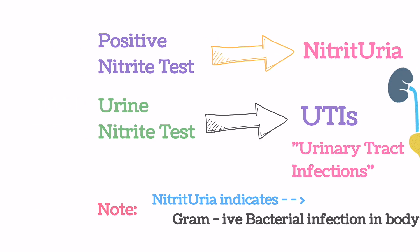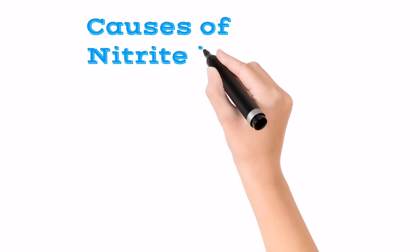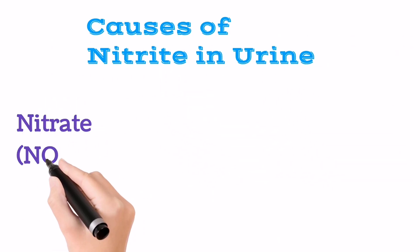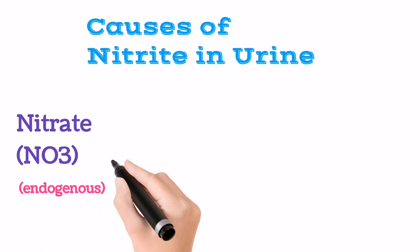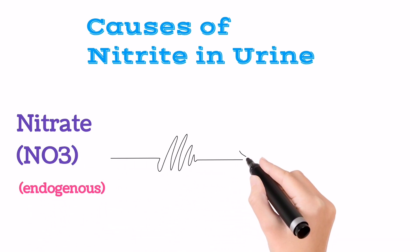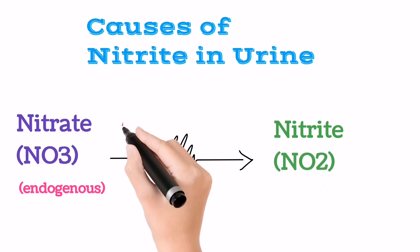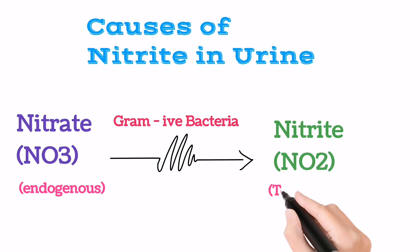Now what are the causes of nitrite in urine? The endogenous nitrate, which is non-toxic, is converted into nitrite by gram-negative bacteria, and nitrite is toxic to the body.